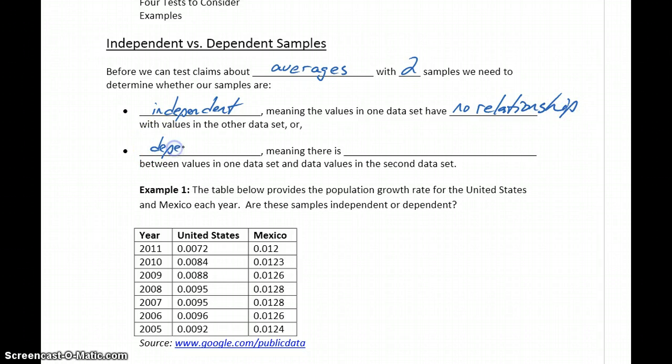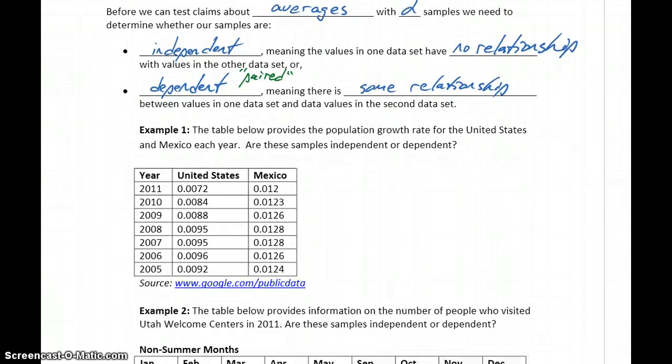Two data sets are said to be dependent, meaning that there is some relationship that exists between the values in one data set and the values in the other. Another word for this idea of dependent is paired. If we talk about dependent or paired samples, it means there's some relationship or connection between the values in the two data sets.